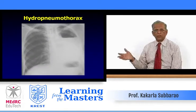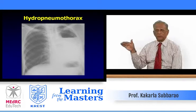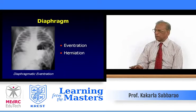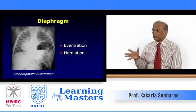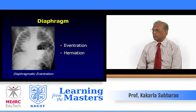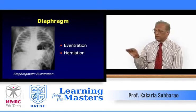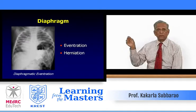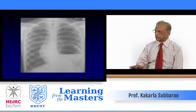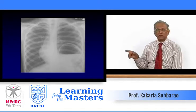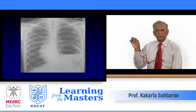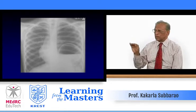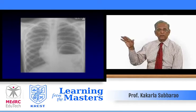Sometimes hydropneumothorax or pyopneumothorax is loculated with an air-fluid level on the left side — simple diagnosis. This should not be mistaken for eventration or herniation through the dome of the diaphragm. Eventration of the diaphragm: the left dome is elevated, heart slightly shifted, and the stomach air bubble is high — classical eventration. But in the differential diagnosis, a strangulated stomach through a traumatic diaphragm hernia may look the same. Another classical example of eventration shows the thin diaphragm and the stomach bubble with its superior border almost simulating the diaphragm.